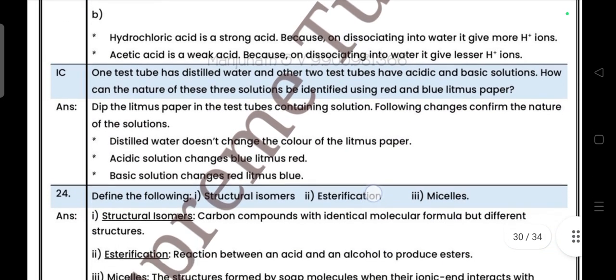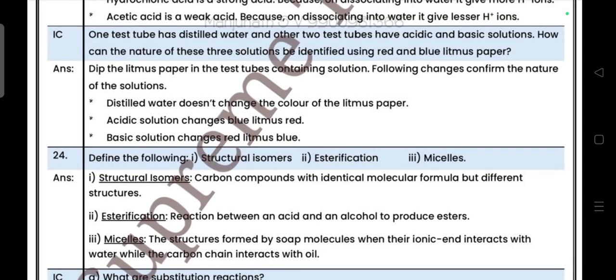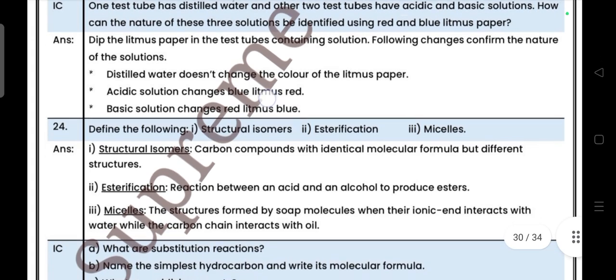Next one: Test tube has distilled water, another test tube has acidic and basic solution. How can the nature of these three solutions be identified using red and blue litmus paper? The answers. Then define the following: structural isomers, esterification, and miscellaneous.